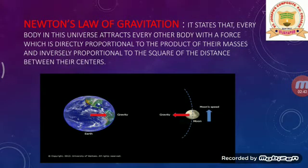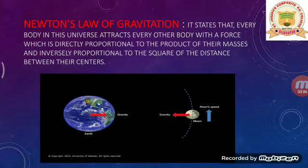The first to propose the gravitational law was Sir Isaac Newton. According to Newton's universal law of gravitation, every body in the universe attracts every other body with a force which is directly proportional to the product of their masses and inversely proportional to the square of the distance between their centers. For example, considering the earth and moon, if m1 is the mass of the earth and m2 is the mass of the moon, the gravitational force is directly proportional to m1 times m2 and inversely proportional to the square of the distance.